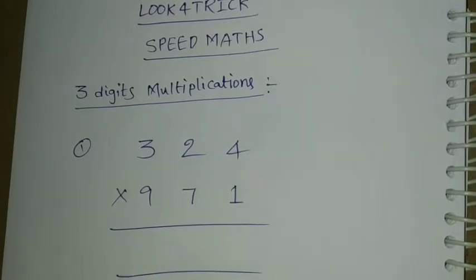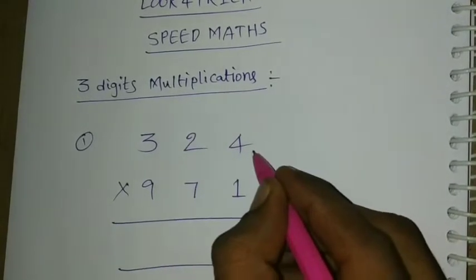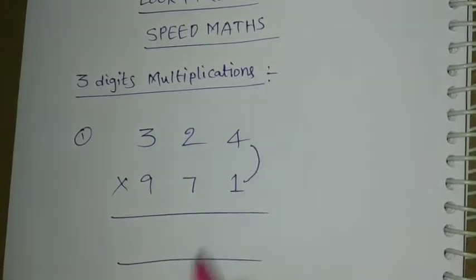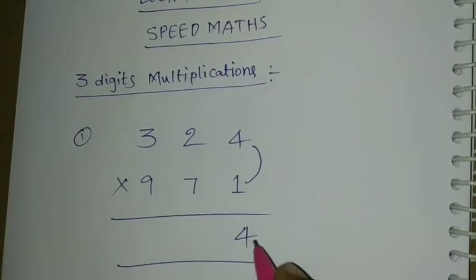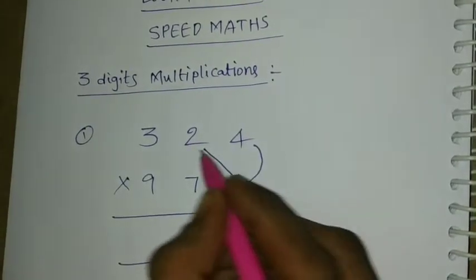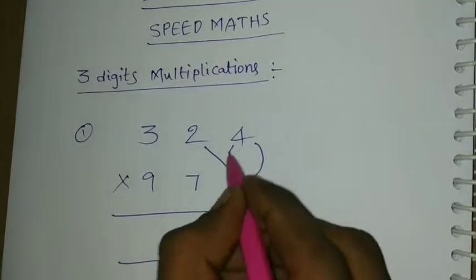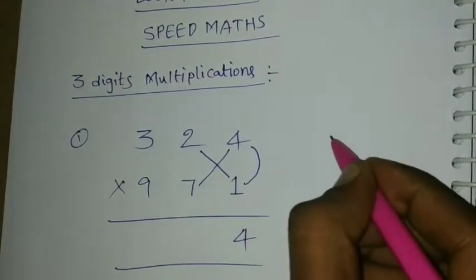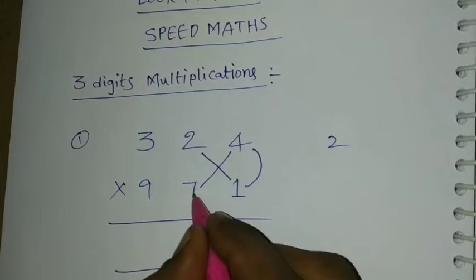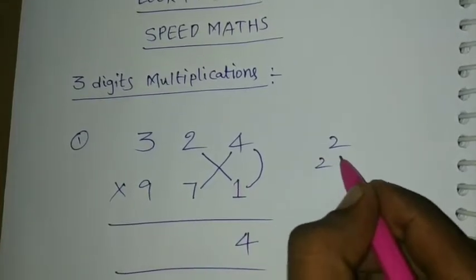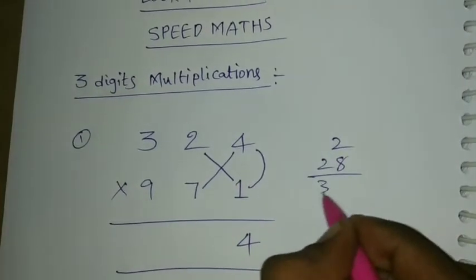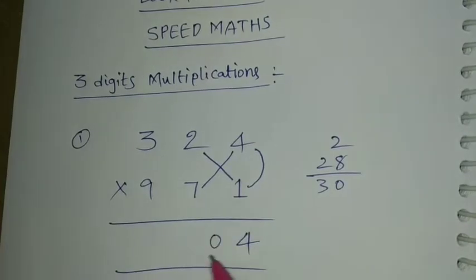Friends, first step: last 2 digits multiply. 4 into 1. Next cross: 2 into 1, 4 into 7. 2 into 1 is 2. 4 into 7 is 28. 30, 0 equal to 3 carry.